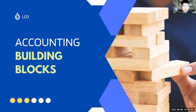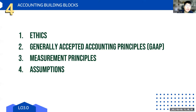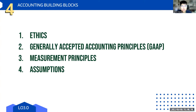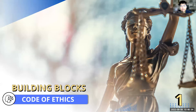Moving on to the bulk of today's discussion. Before we start accounting, we need to focus on the building blocks. There are four building blocks. Number one is ethics — it's not enough to be a great accountant; honor and excellence are super important. Number two is the standard setting bodies that regulate the rules of accounting. Number three is measurement principles and general rules and assumptions. Let's take a deep dive into the code of ethics.